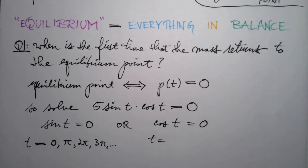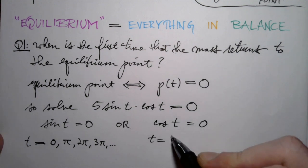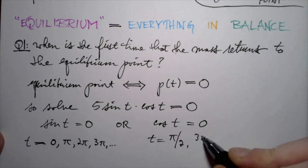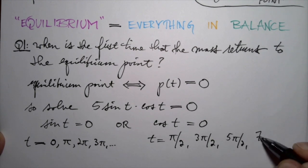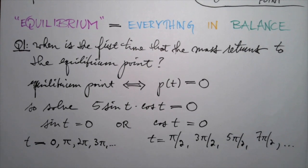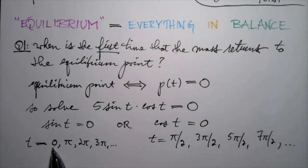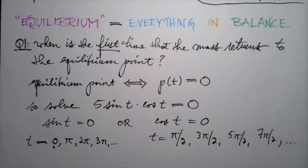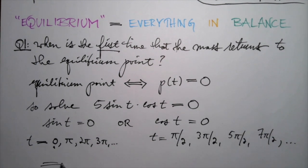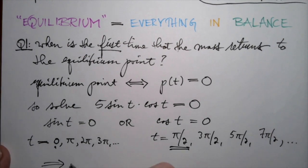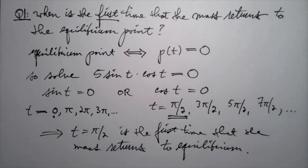Cosine of t equals zero when the point on the unit circle is on the y-axis — at the top and bottom — so those t values are pi over two, three pi over two, five pi over two, seven pi over two, and so on. These are all the t values where we're at equilibrium. We want the first time after t equals zero that the mass returns to equilibrium. The answer is t equals pi over two — that's the smallest of these t values.